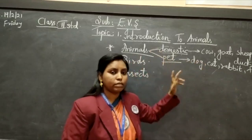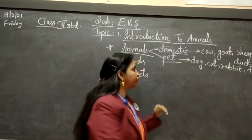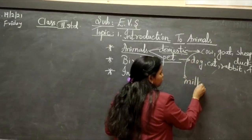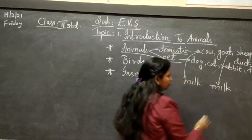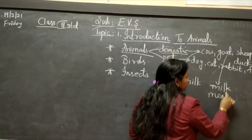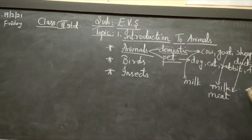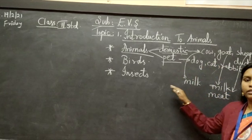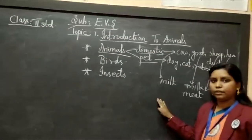The domestic animals which you rear at home, you keep them for some purpose. Cow gives you milk. Goat also gives us milk and meat. Sheep gives the same. Hen and duck give us eggs. So all these animals are reared at home for domestic purposes.